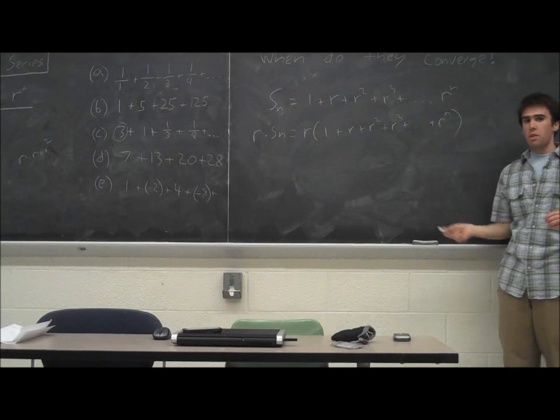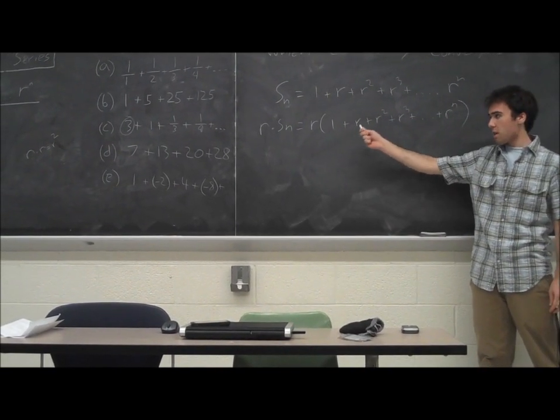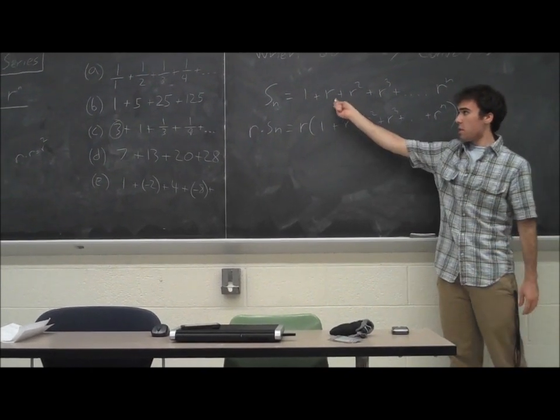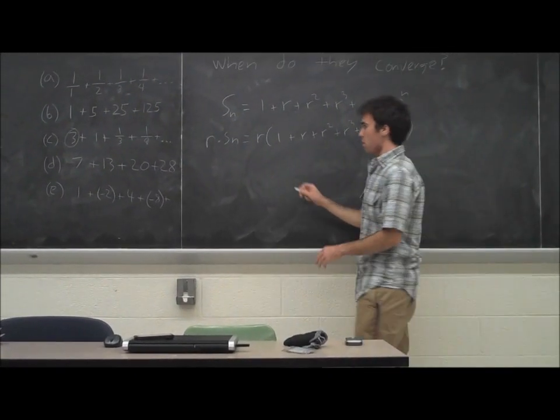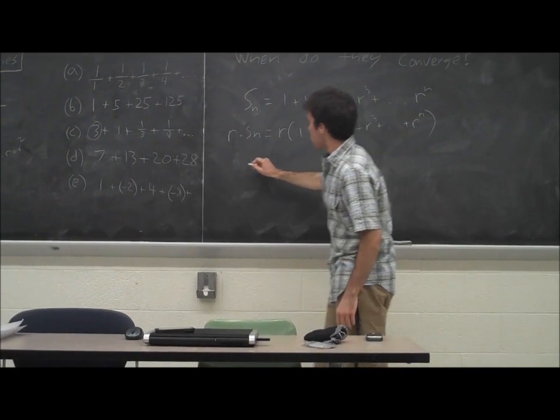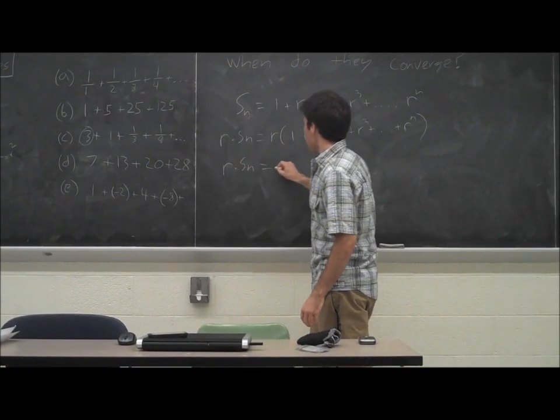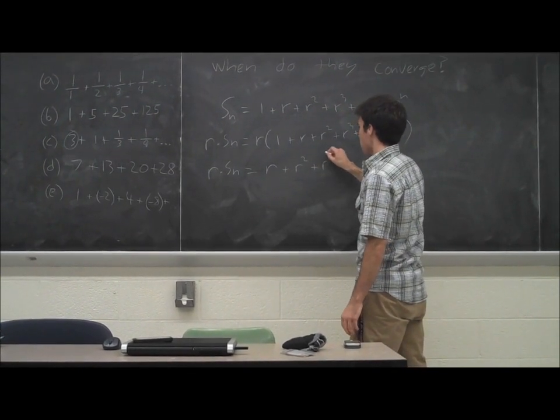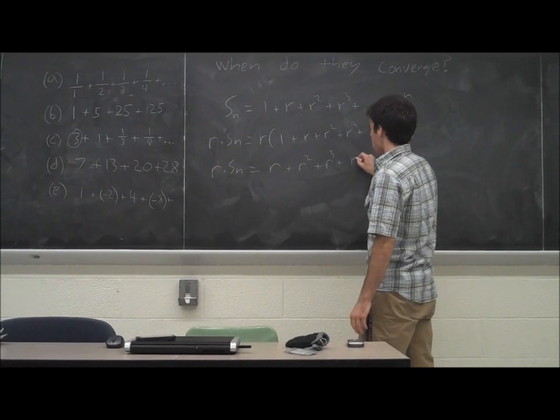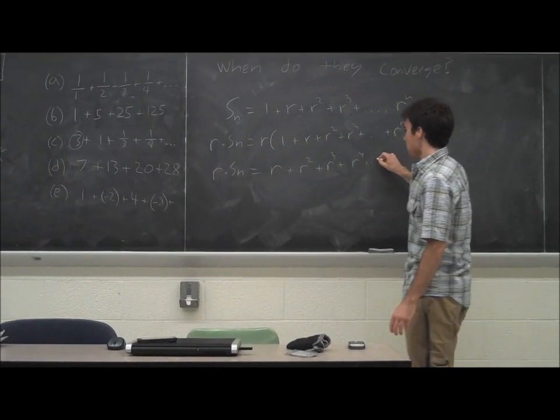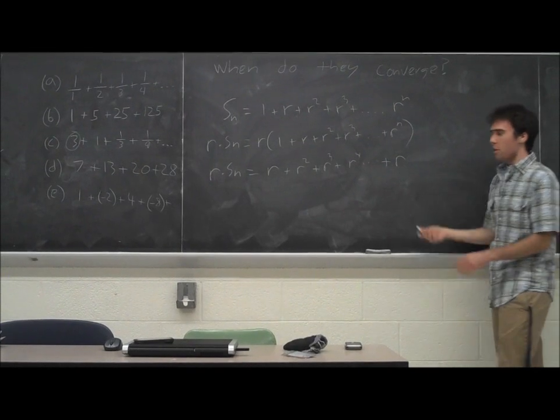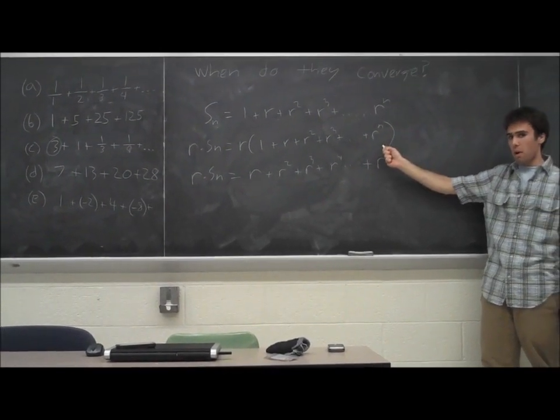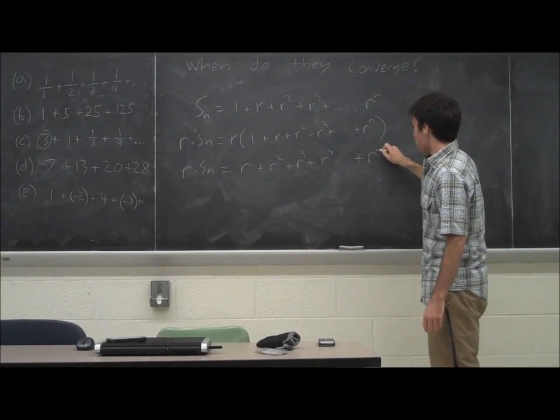What we notice is that when we distribute this, when we actually go through and multiply it, we'll get each successive term in the sequence above. So if we go through, 1 times R is R, R times R is R squared, R times R squared is R to the third, R to the fourth, dot dot dot. And can anyone tell me what the last term would be? If the last term is R to the n, and we multiply by R, we get, yeah, R to the n plus 1.